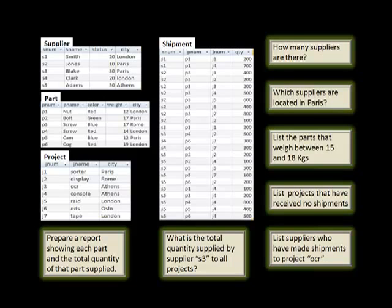For example, how many suppliers are there? There are six suppliers. Which suppliers are located in Paris? Supplier two, supplier three. You can answer that question. List projects that have received no shipments — J1, J2, J3, J4, J5. Is there such a project? There are seven projects, J1 to J7, and all of them appear somewhere in the shipments table. That means there is no such project — we can answer that question. And we can answer all of these other questions as well.